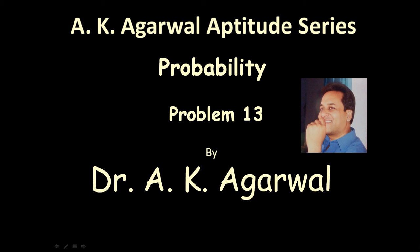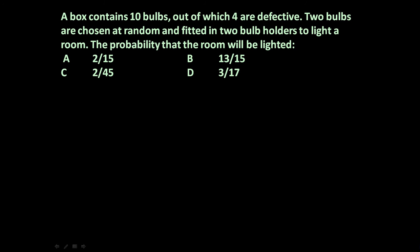Hello friends and welcome to AK Agrawal aptitude series. In this session we are going to learn a technique for solving a problem on probability. The given problem is: a box contains 10 bulbs, out of which 4 are defective. 2 bulbs are chosen at random and fitted in 2 bulb holders to light a room. What is the probability that the room will be lighted?